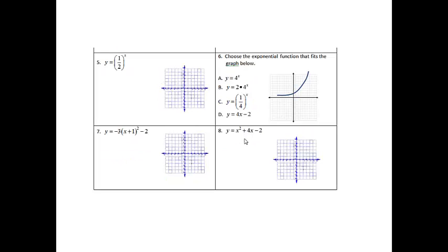We have y equals 1 half to the x. This is an exponential function, just because of the nature of it — we've got something to a power. There's nothing out here, which means the graph is going to touch at 1. And the 1 half, since it is less than 1, my graph is going to decay instead of grow. So I'm going to draw a nice smooth exponential curve, and it's just going to keep getting smaller and smaller.